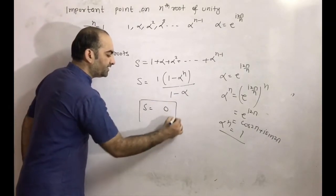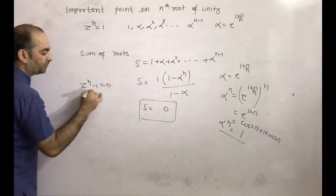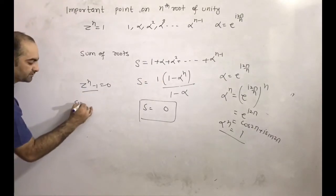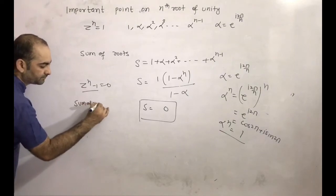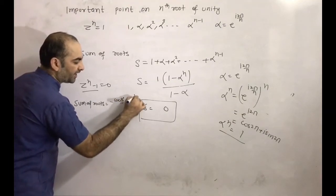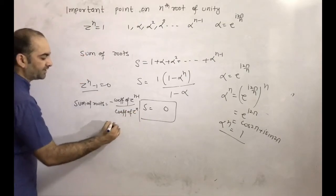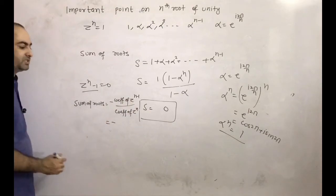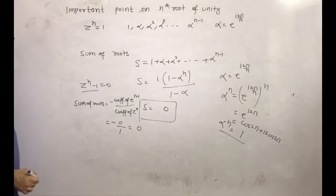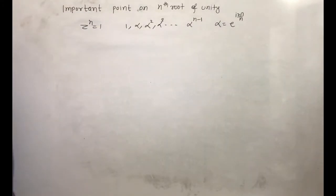For finding the sum, we can also use the polynomial z^n - 1 = 0. The sum of roots from the polynomial coefficients gives the same result. Either by direct addition or by the polynomial formula, we can find the sum. Next we are finding the product of roots.